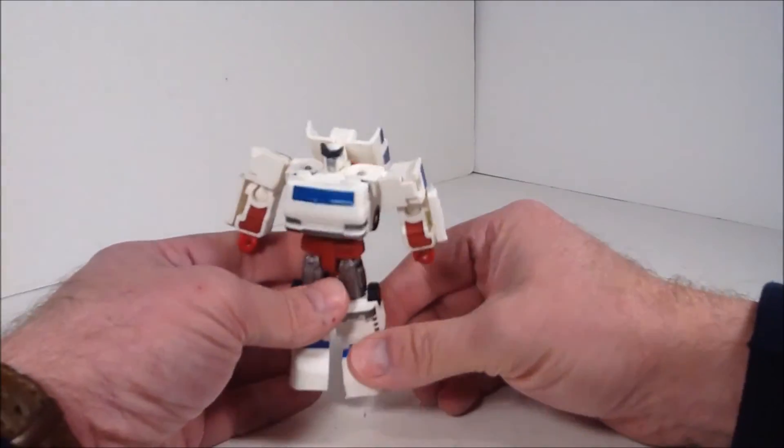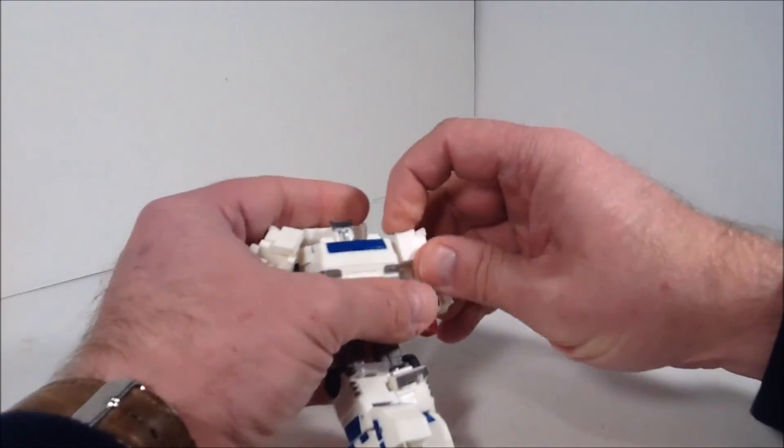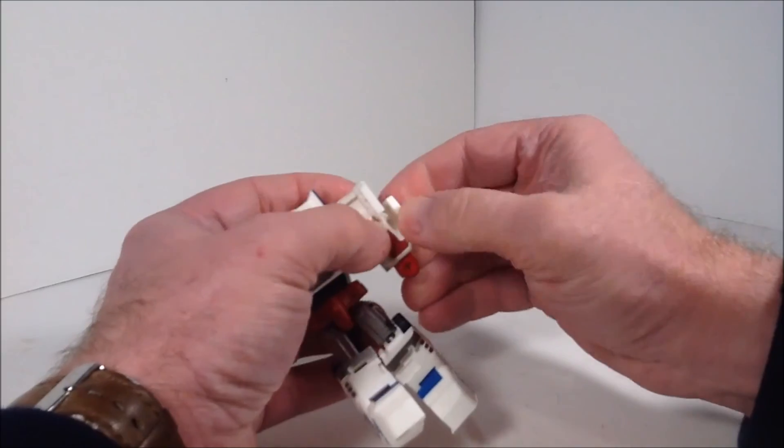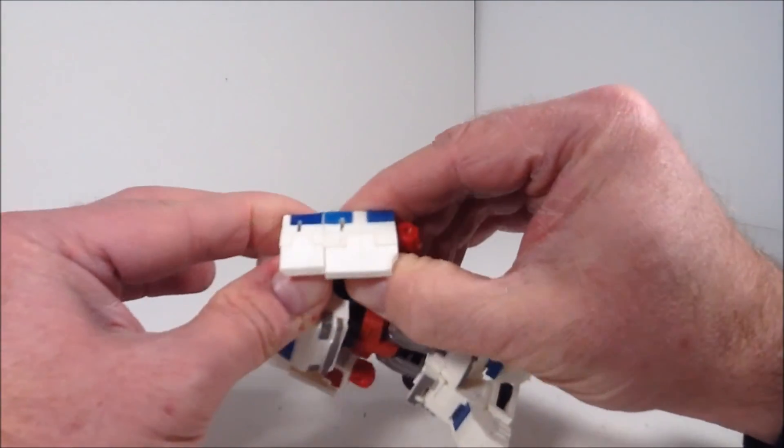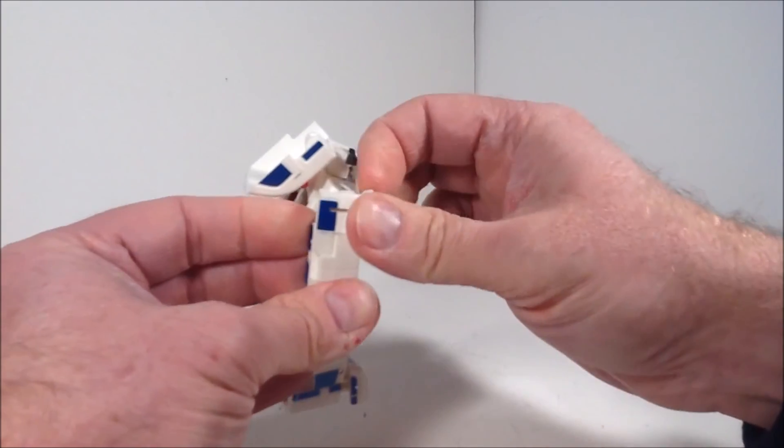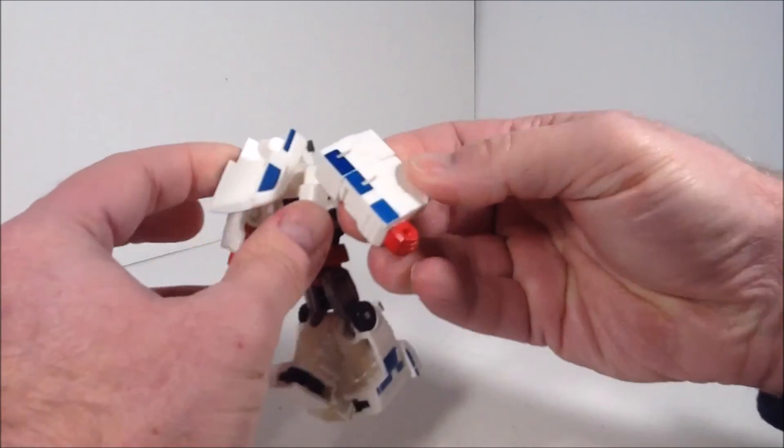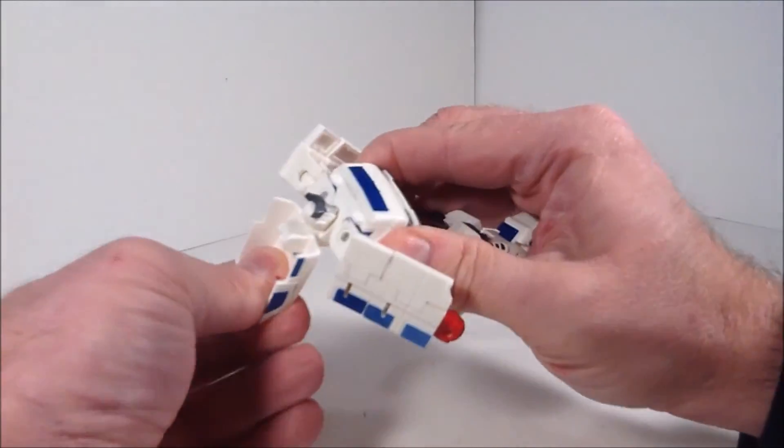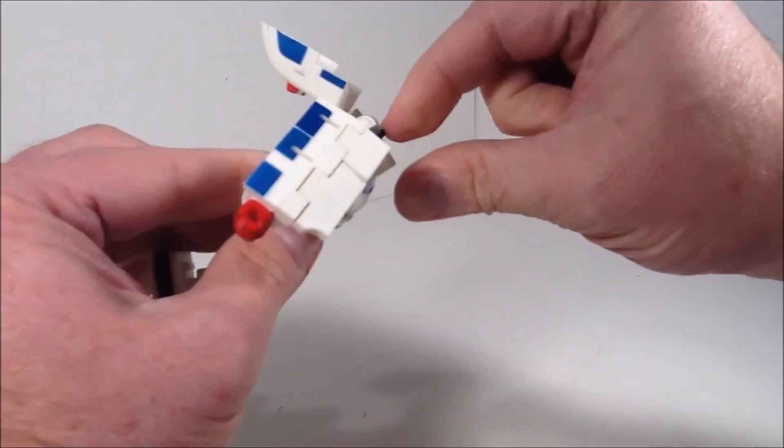So tell you what, I'm gonna transform him right now. So you can see how he works. First thing you do. Take this out. Take this out. Fold this down so that it looks like this. Okay. Do this on both sides. Bring this up like this. Now take your head. Move it all the way forward. As far as it'll go. Okay.